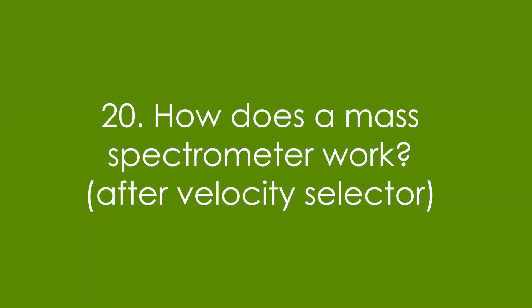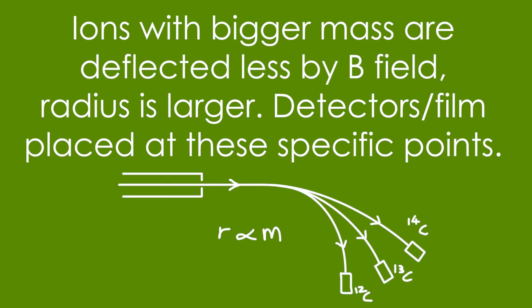Question 20: How does a mass spectrometer work after the velocity selector? There's another magnetic field, and ions with a bigger mass are deflected less by it, so the radius is larger. Detectors or film are placed at these specific points to see how many ions reach each detector. This is because from the earlier equation, radius is proportional to mass.